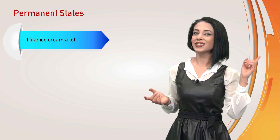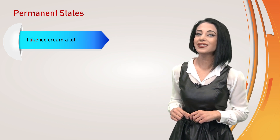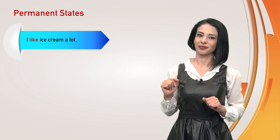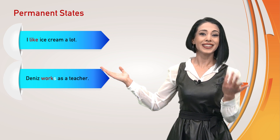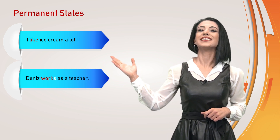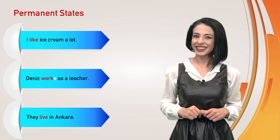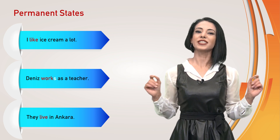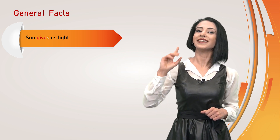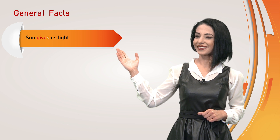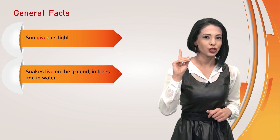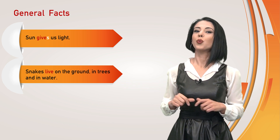What about permanent states — situations or feelings which are not temporary? I like ice cream a lot. Denise works as a teacher, or they live in Ankara. We also use the present simple for general facts. Sun gives us light. Snakes live on the ground, in trees and in water.